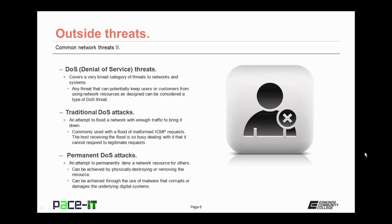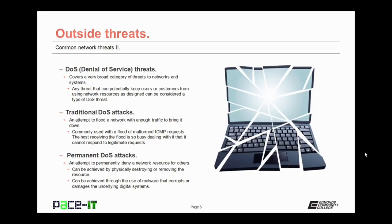The first major threat we're going to talk about is the denial of service threat, or the DOS threat. This covers a very broad category of threats to networks and systems, because DOS covers any threat that can potentially keep users or customers from using network resources as designed. A traditional DOS attack attempts to flood a network with enough traffic to bring it down. It's commonly used with a flood of malformed ICMP requests. The host that receives the flood can be so busy dealing with the deluge of data that it cannot respond to legitimate requests.